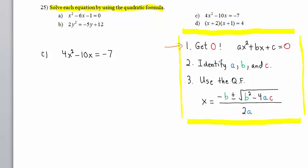In Part C, this equation is not in standard form. We are going to add seven to both sides. That gives us 4x² - 10x + 7 = 0. Now we can identify a, b, and c. a is 4, b equals -10, c equals 7.